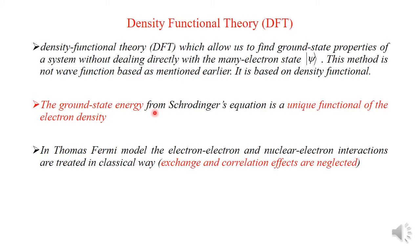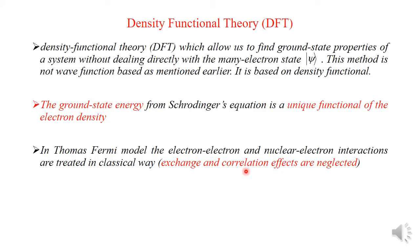The ground-state energy from the Schrödinger equation is a unique functional of electron density. This is the important point about Density Functional Theory. In the previous lecture, we saw the Thomas-Fermi model, but its drawback is that electron-electron and nuclear-electron interactions are treated in a classical way, meaning exchange and correlation effects are neglected.